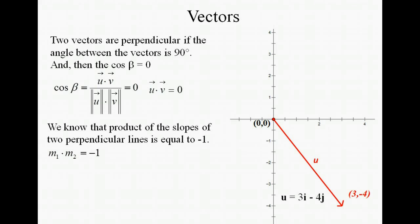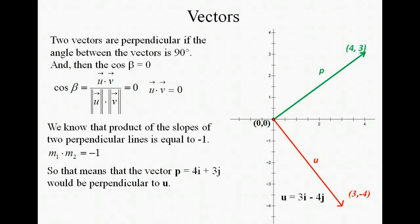You already know that the product of the slopes of perpendicular vectors is equal to negative 1. So that makes it really easy for us to find another vector that's perpendicular to the one we have — we just need an opposite reciprocal slope. Or in other words, all we have to do is exchange x for y, and then make sure that the signs are going to be opposites. So looking at this vector 4, 3, it has a slope that's the opposite sign of 3, negative 4, so it would be perpendicular to vector u.